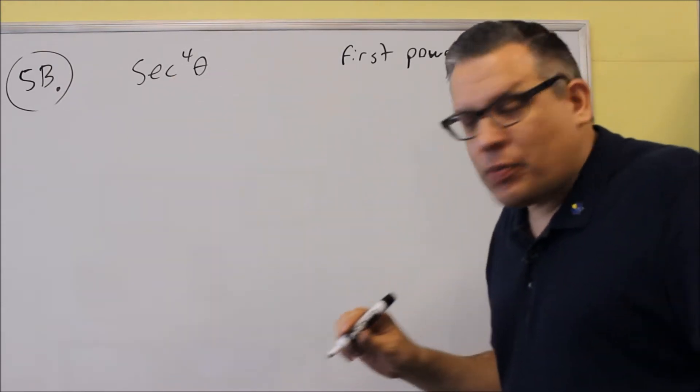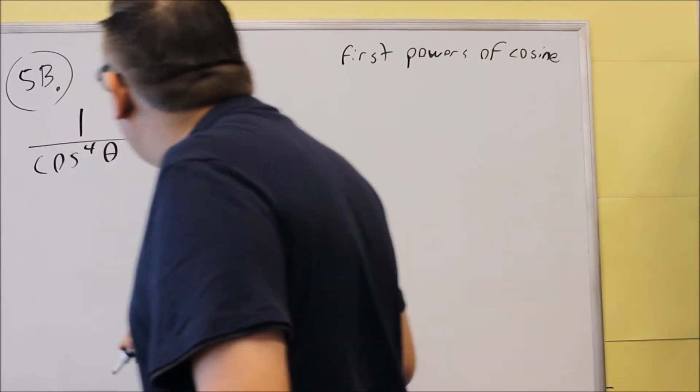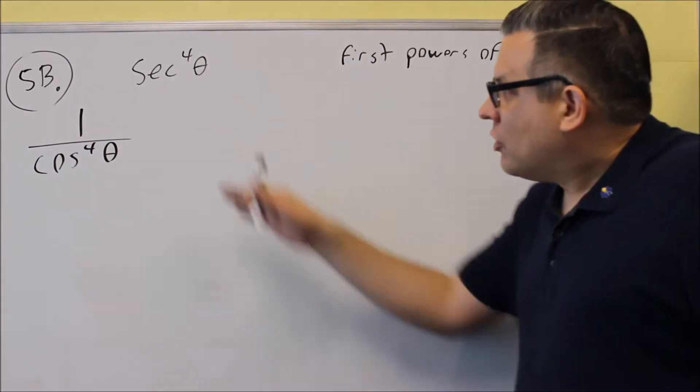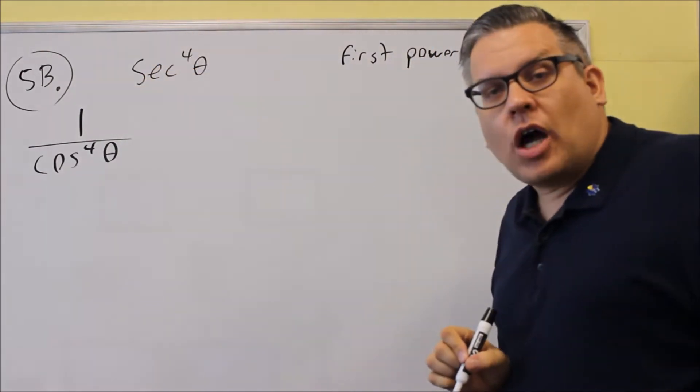So secant to the fourth power, that's the same thing as 1 over cosine to the fourth theta. So secant is 1 over cosine, the same power you have here will go along with that one.